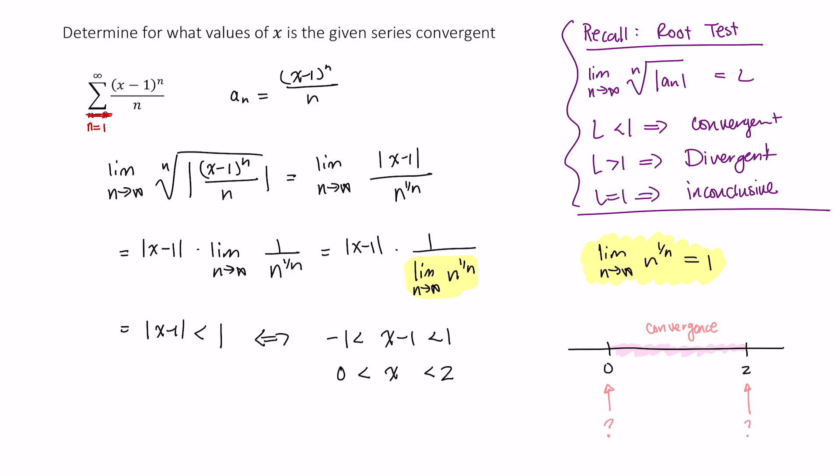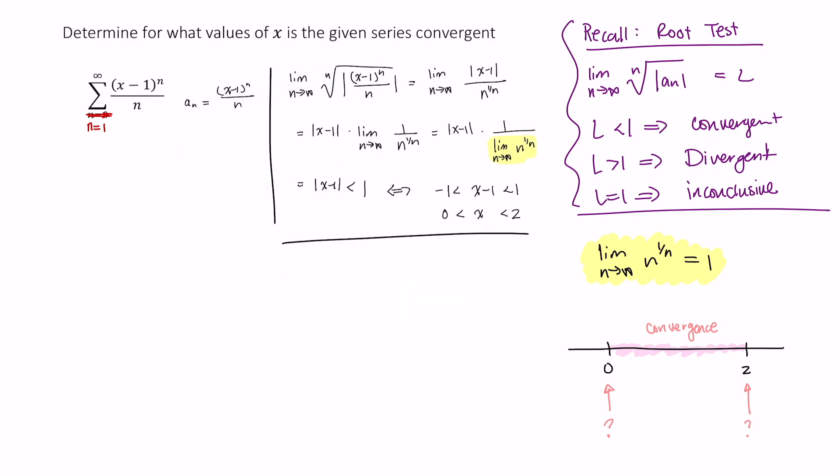Well, for that, let's apply other tests. Okay, as you can see, I quickly just made a little bit of space here. If x equals 0, what do we end up with? We have the sum from 1 to infinity of 0 minus 1 to the nth power over n. This is the sum from n equals 1 to infinity of negative 1 to the nth power over n. This is the alternating harmonic series.